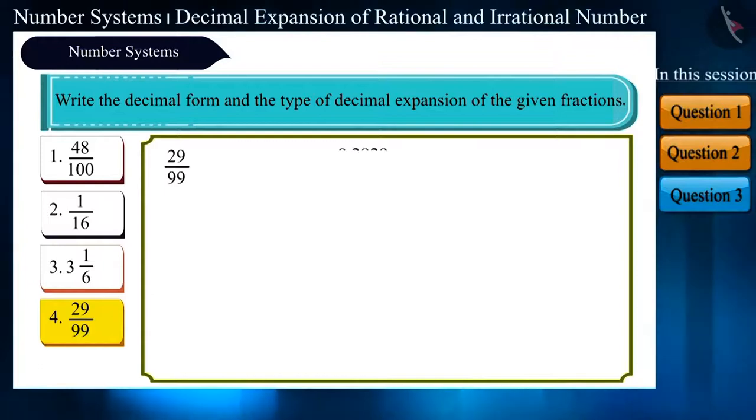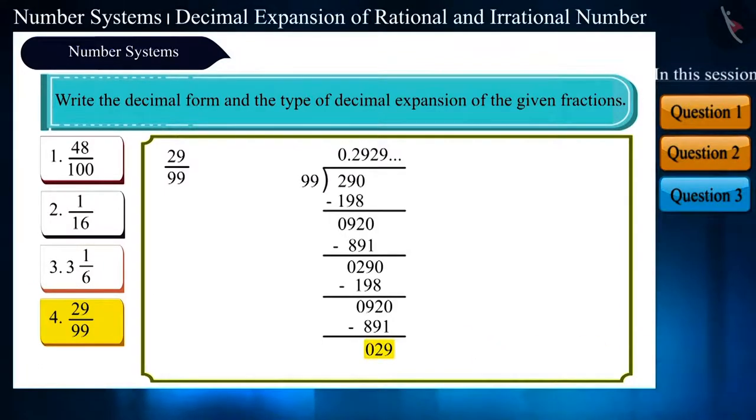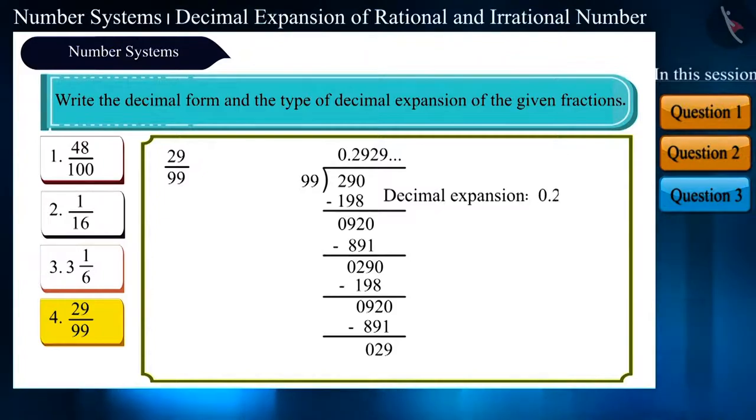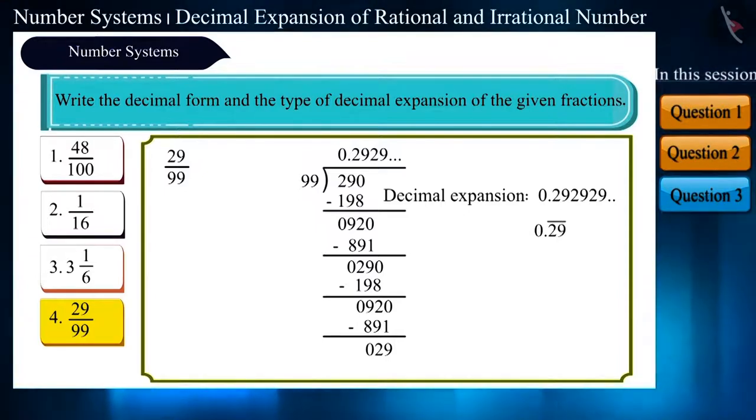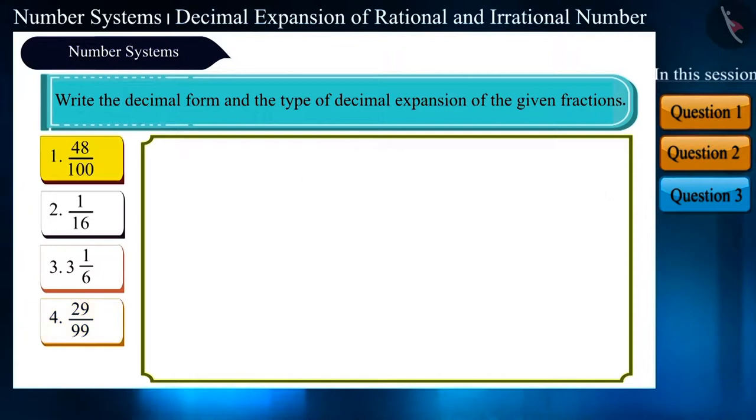Let's look at the next fraction 29 by 99. If we solve this, we realize that the remainder is not 0. In the quotient, 2 and 9 keep repeating themselves. And the decimal expansion is 0.292929. We can also write this as 0.29 bar. Upon looking at it, you can easily say that this expansion is also non-terminating, recurring.